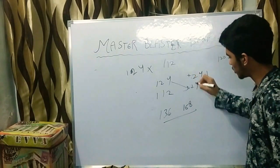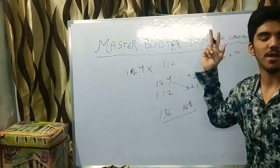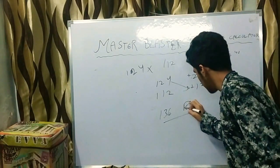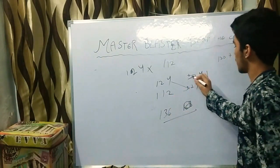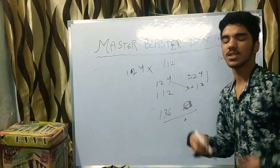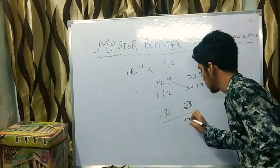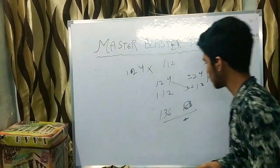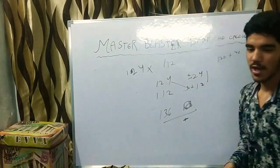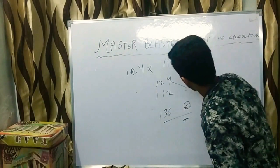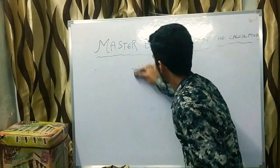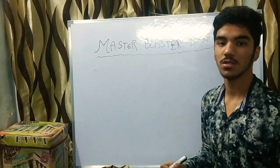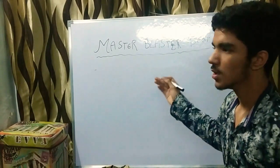If you get a positive number for the second part, you can straight away write it. But if you get a negative number, write a zero. A plus sign means you just add it directly — it's simple.